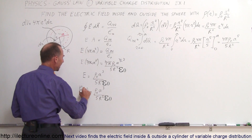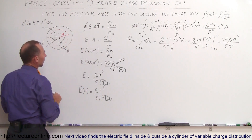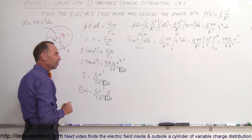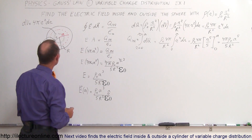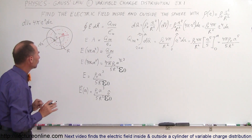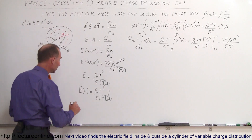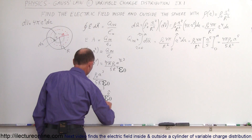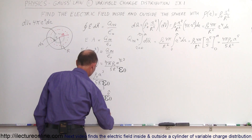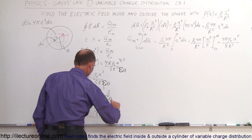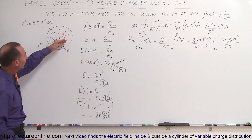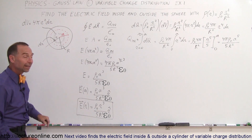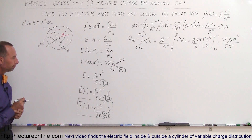We should use little r as the variable inside the sphere since the Gaussian surface can be placed at any distance. So E as a function of r equals ρ₀r³ / (5R²ε₀) in the r̂ direction. Little r is the variable for any point inside, and big R is the radius of the sphere. That is the electric field anywhere inside the sphere.